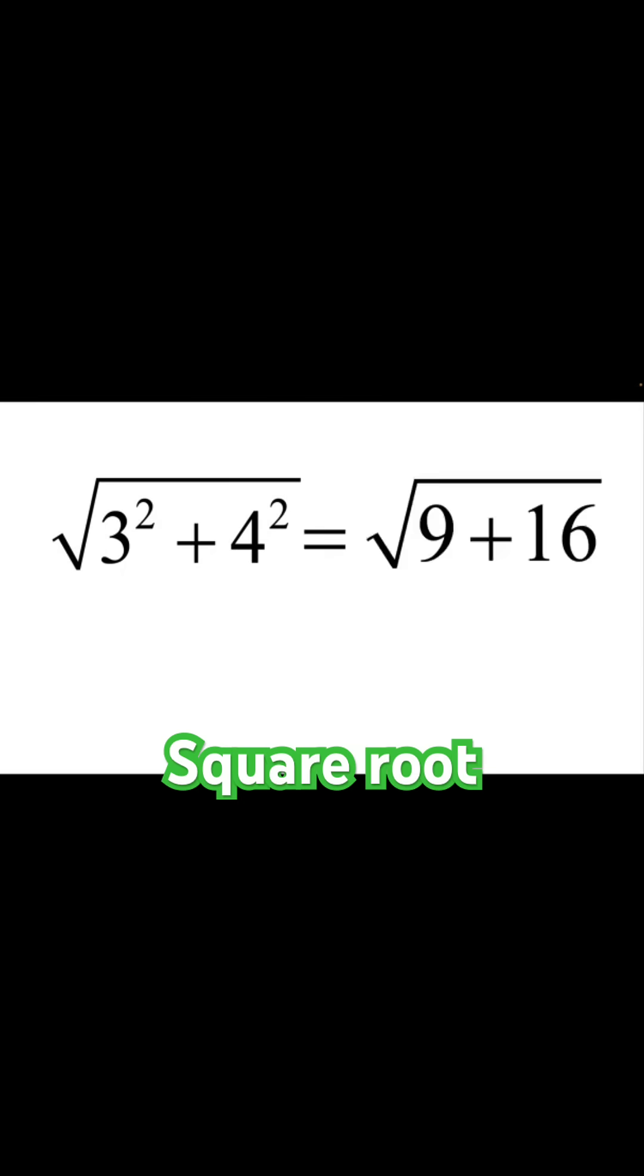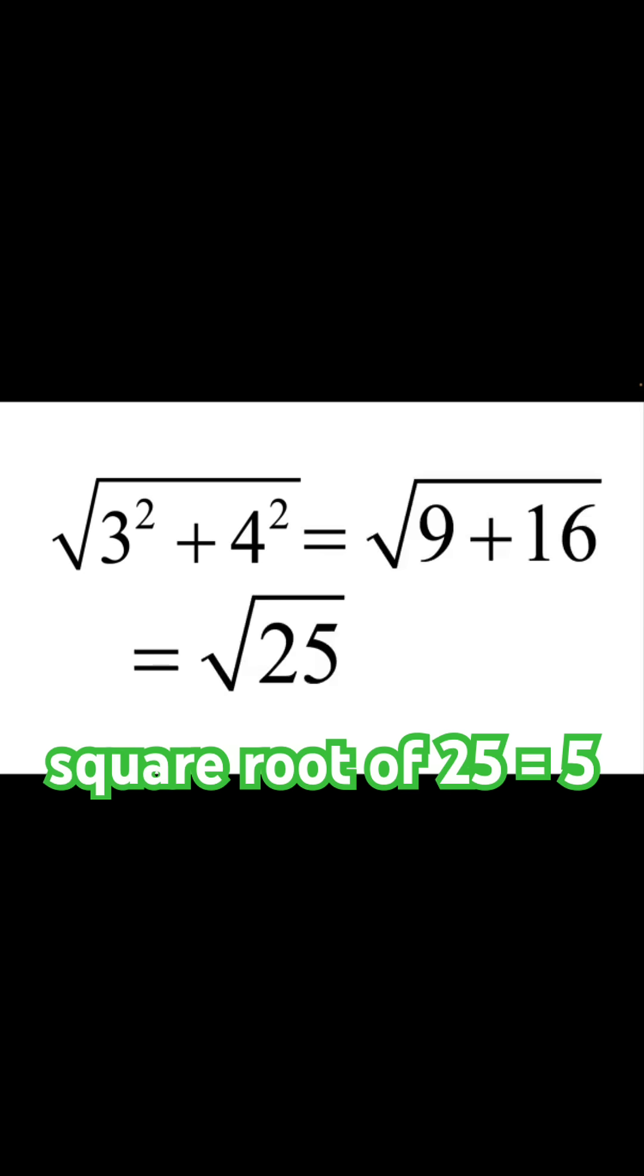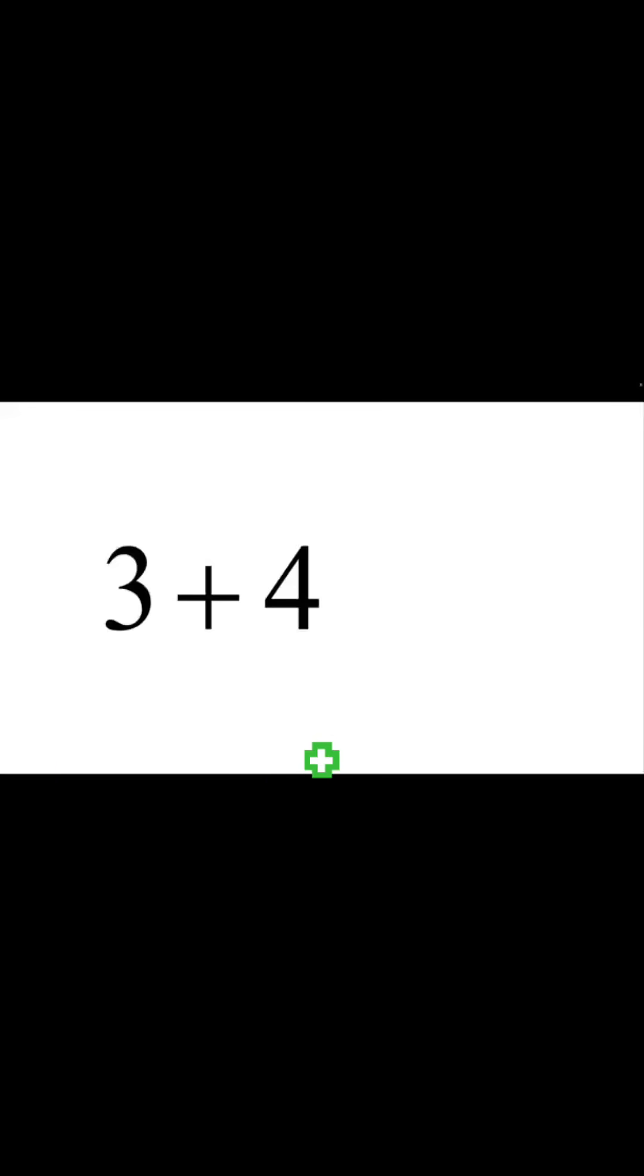Square root of 3 squared plus 4 squared equals square root of 9 plus 16 equals square root of 25 equals 5. But 3 plus 4 equals 7, not 5.